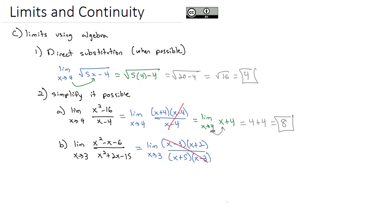And then we can reduce out the x minus 3 factor, which just leaves us the limit as x approaches 3 of x plus 2, over x plus 5.